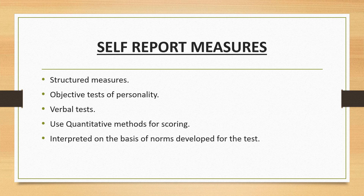Such measures, sometimes known as objective tests of personality, contain questions or statements to which each individual responds in various ways. For example, a questionnaire might ask respondents to indicate the extent to which each statement is true or false about themselves, or the extent to which they agree or disagree with various sentences. A person simply indicates the extent to which they agree or disagree — for example, 1 = strongly disagree, 2 = disagree, 3 = neutral, 4 = agree, and 5 = strongly agree.